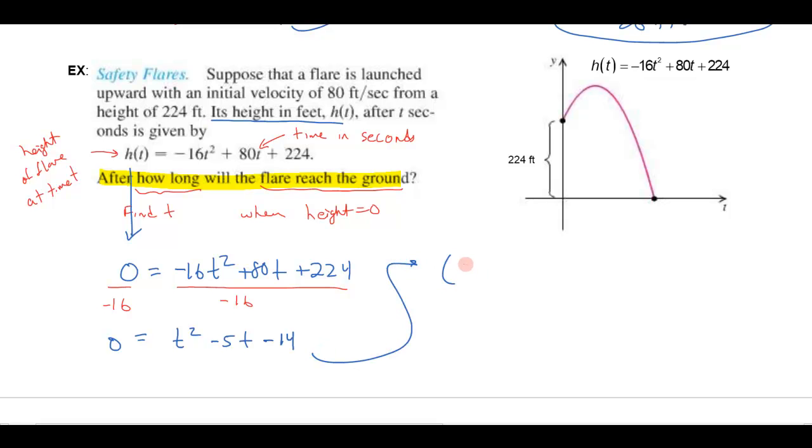So then I just solve that, and I get t minus 7 times t plus 2 equals zero. That'll give you t squared, 2t minus 7t is the minus 5t in the middle. So I'm either going to get t equals 7 seconds or t equals minus 2 seconds. And again, the minus 2 seconds, that's not going to make sense in this particular problem. What it actually means is if you would have followed this parabola down, that would correspond to negative 2 over here, but that's not part of this problem. And then over here is the t equals 7 seconds when it hits the ground. So the flare hits the ground after 7 seconds.